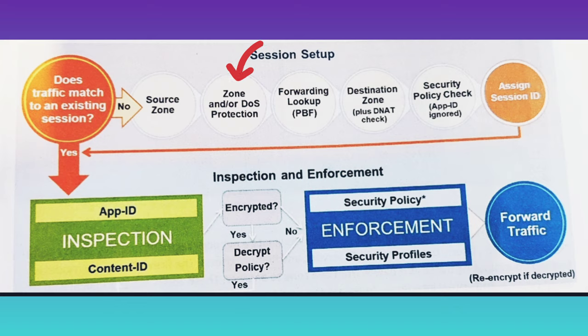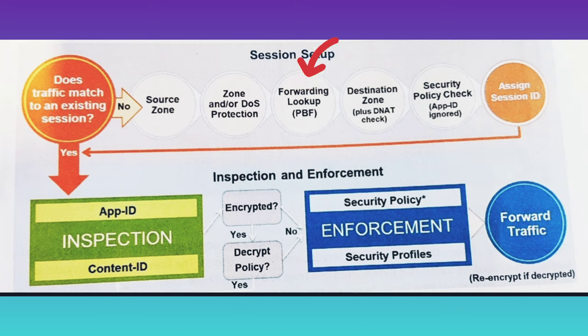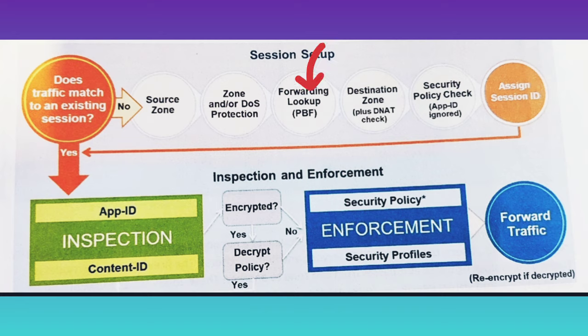After the zone or DDoS protection check, the packet is checked for forwarding lookups and policy-based forwarding. Normally the firewall uses the destination IP address in a packet to determine the outgoing interface, using the routing table associated with the virtual router. Policy-based forwarding allows you to overwrite the routing table and specify the outgoing interface based on specific parameters such as source or destination IP address or type of traffic.